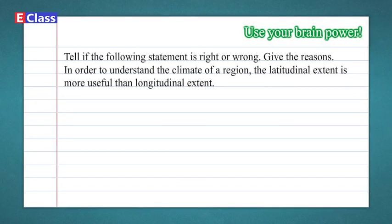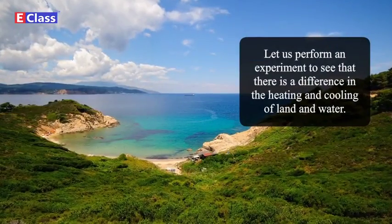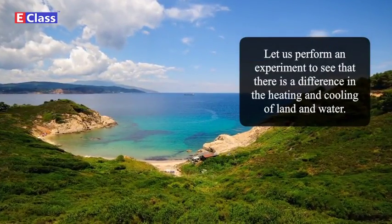Use Your Brain Power: Tell if the following statement is right or wrong and give reasons — 'In order to understand the climate of a region, the latitudinal extent is more useful than the longitudinal extent.' Answer: The given statement is right. Reasons: Temperature does not change as per longitudes; temperature changes as per latitudes. The temperature decreases from the equator to the north and south poles.